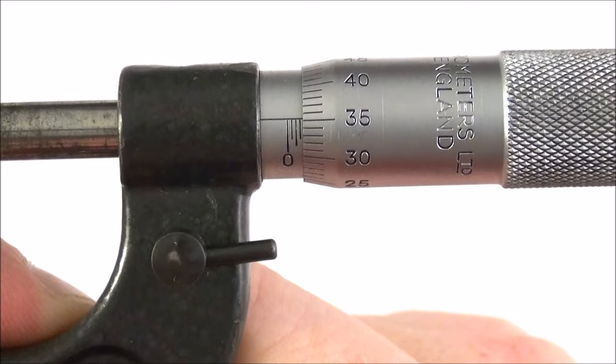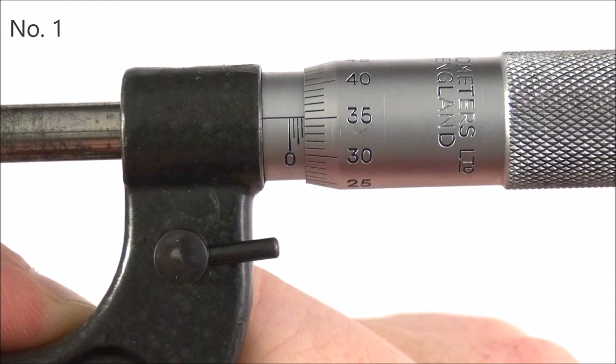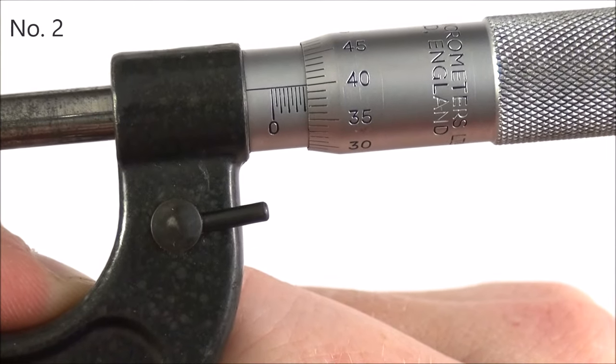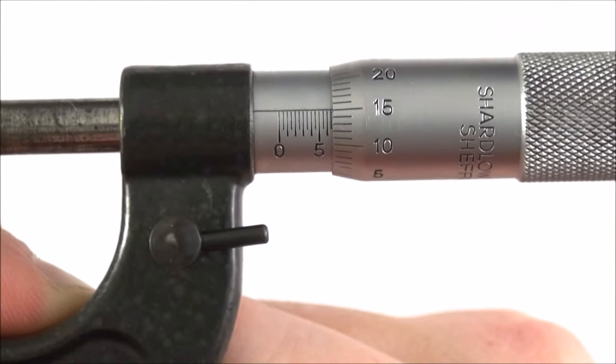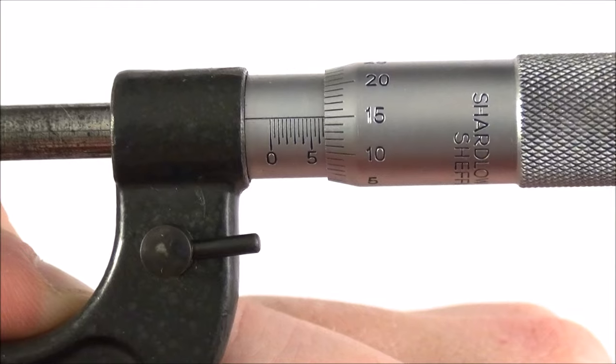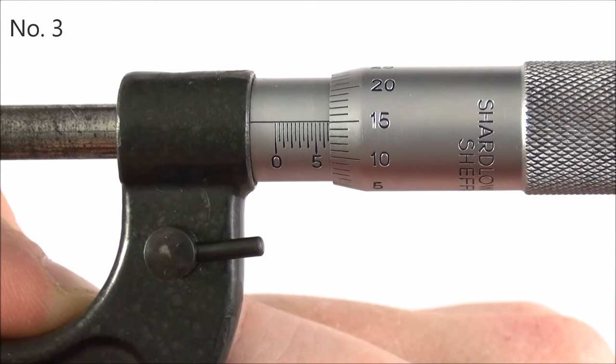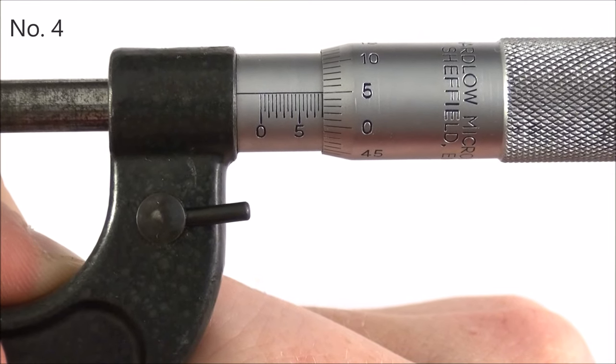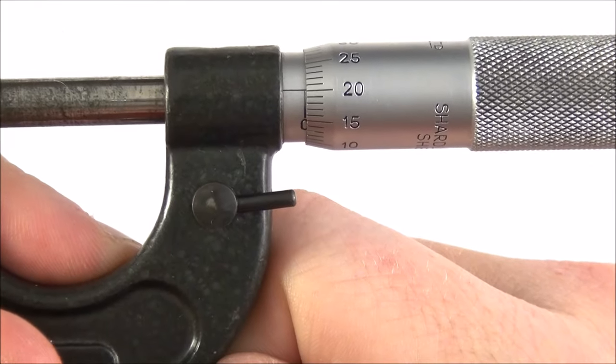So here we go, this is reading number one. This is reading number two. This one here gets a bit more tricky, this is reading number three. This one is reading number four. And finally this is reading number five.